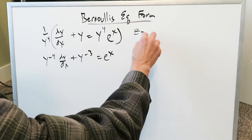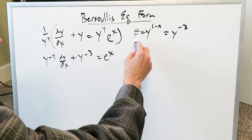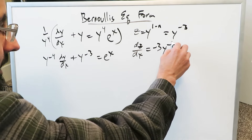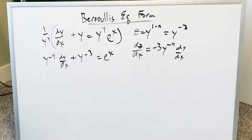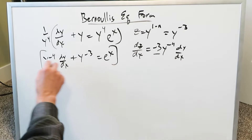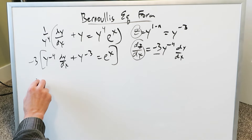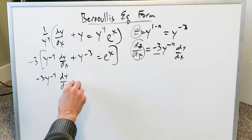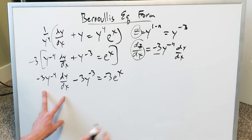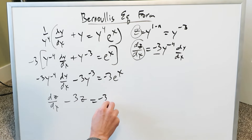Next comes the z-substitution: z is always equal to y to the 1 minus n. Here n equals 4, so z equals y to the 1 minus 4, which is y to the minus 3. Taking the derivative: dz over dx equals, by the power rule, minus 3 y to the minus 4 dy over dx. Multiplying the whole equation by minus 3 gives: minus 3y to the minus 4 dy over dx minus 3y to the minus 3 equals minus 3 e to the x. Now the substitutions stand out clearly: the first term is dz over dx, and minus 3y to the minus 3 is equal to z, giving dz over dx minus 3z equals minus 3 e to the x.